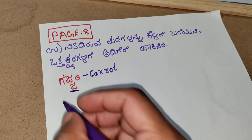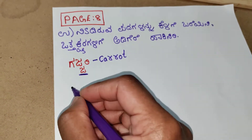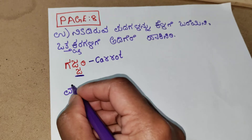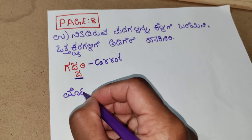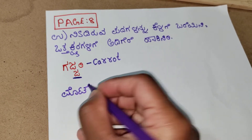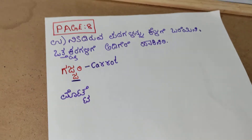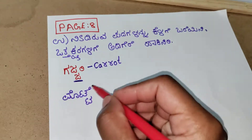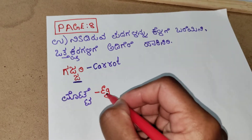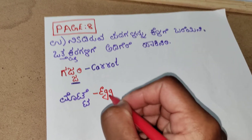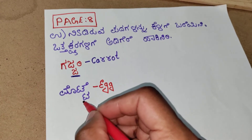The next word is motte. Motte — the meaning of motte is egg. Here the otthakshara is thage thavato.